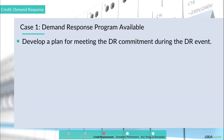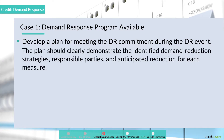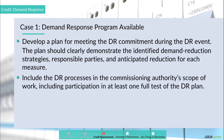Activity 3: develop a plan for meeting the DR commitment during the DR event. The plan should clearly demonstrate the identified demand reduction strategies, responsible parties, and anticipated reduction for each measure. Activity 4: include the DR processes in the commissioning authority's scope of work, including participation in at least one full test of the DR plan.